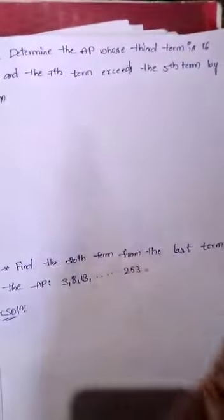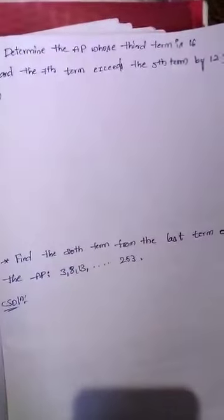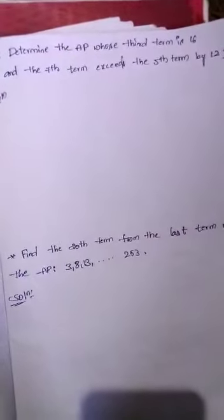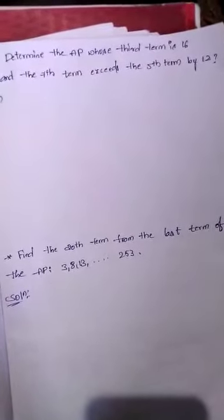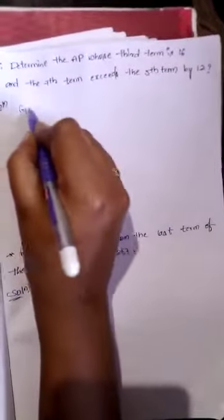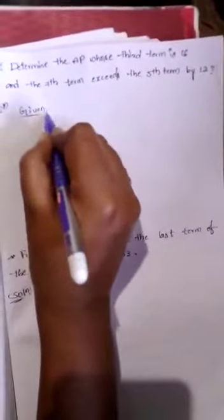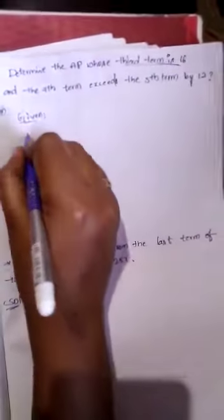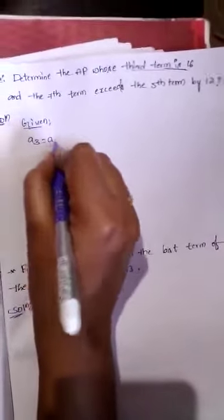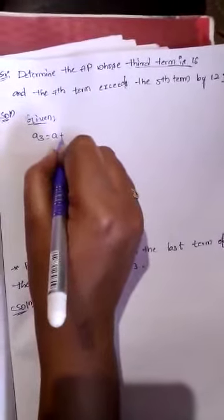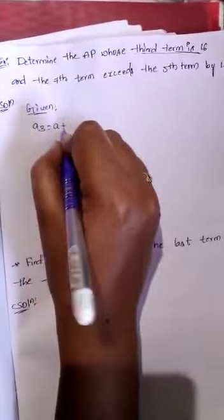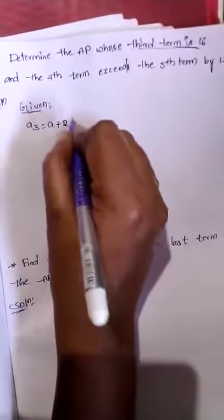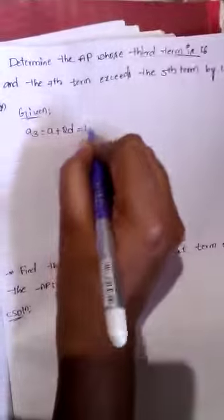Next problem: determine the AP whose third term is 16 and the 7th term exceeds the 5th term by 12. Given that the third term is 16, the third term means A plus (3 minus 1)D, which is A plus 2D, equal to 16. This is equation 1.